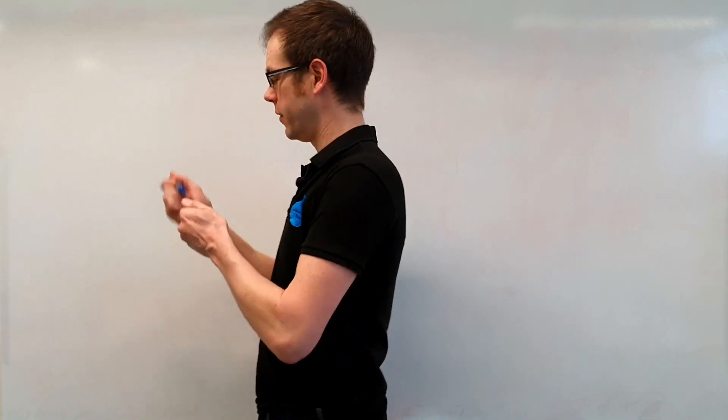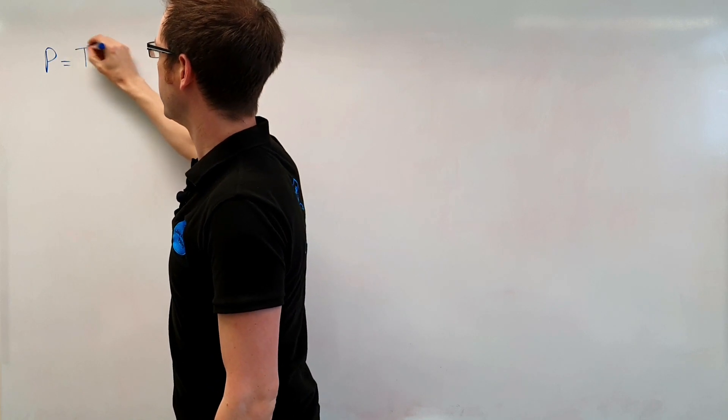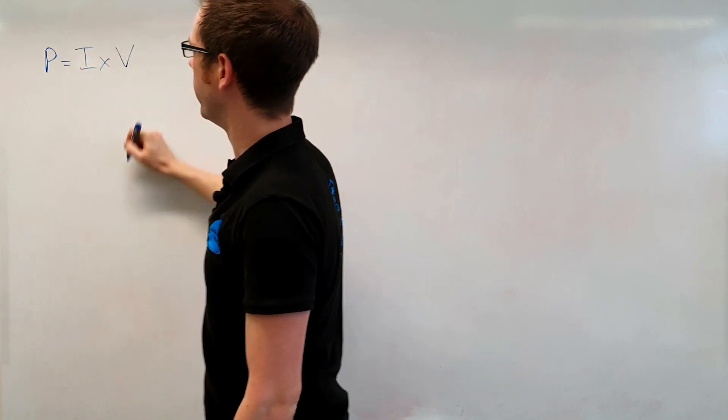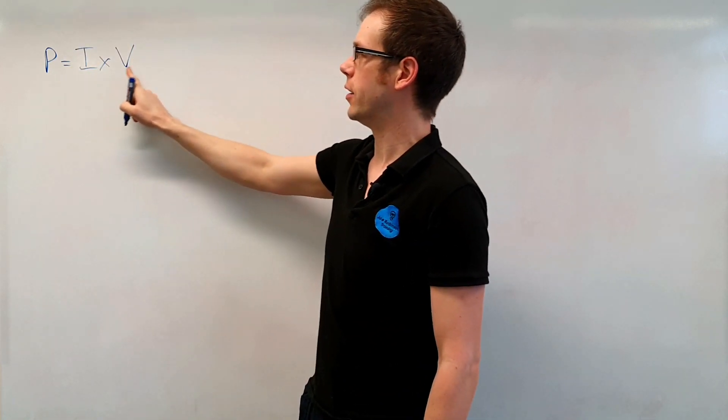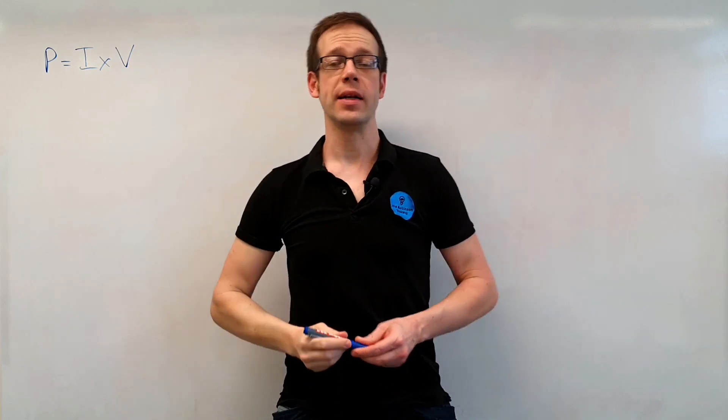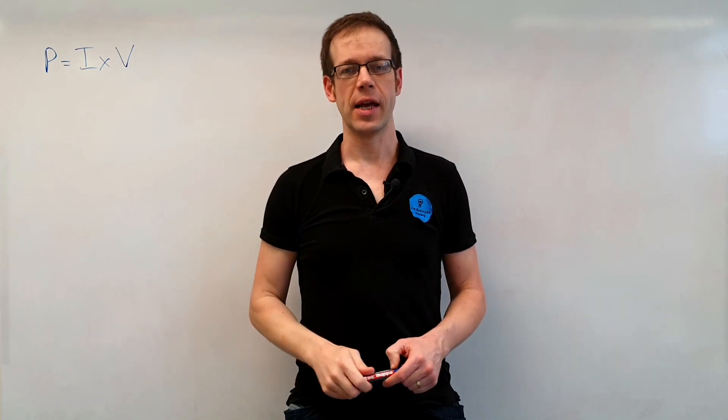We simply said that to find the power in a circuit represented by the letter P that would be equal to the current multiplied by the voltage. So P is equal to I times V and we proved by practical experimentation that that was accurate.